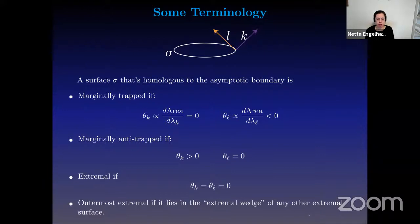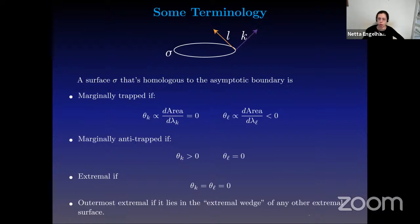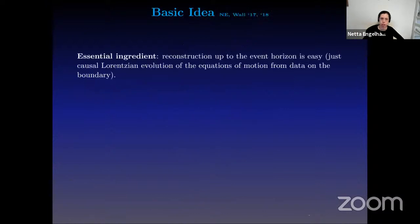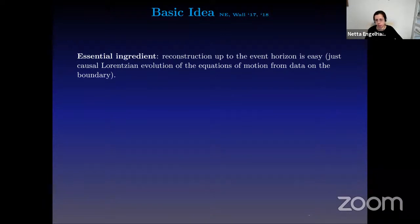It may not be obvious that the outermost extremal surface necessarily exists, but you can prove that it does, so you don't have to worry about a situation where all extremal surfaces are always overlapping. So what's the basic idea? The first essential ingredient is that reconstruction up to the event horizon is simple — it's just causal evolution of the equations of motion from the data on the boundary. This is not standard Cauchy evolution, but this is the essential ingredient we're going to use here.